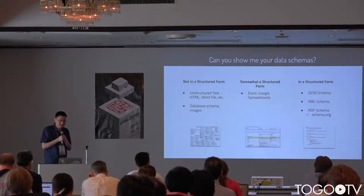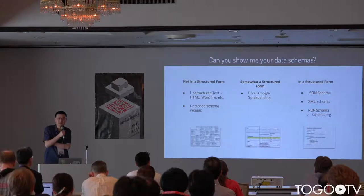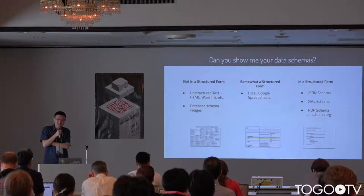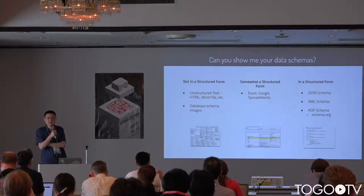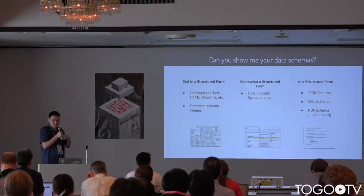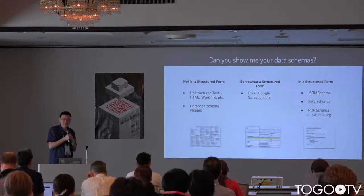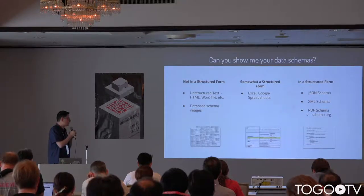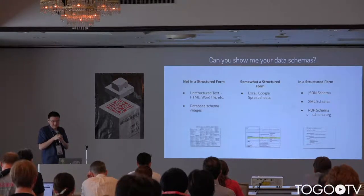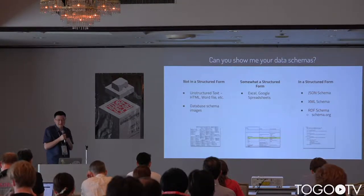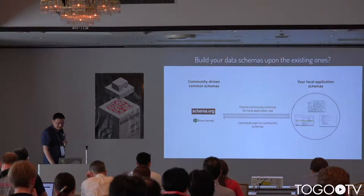The next step, slightly better, is at least a list in Excel or a Google spreadsheet — we can write code to extract that. Nowadays there are more structured forms, for example JSON Schema, XML Schema, and RDF Schema. One special format of RDF Schema is schema.org. That's a much better way, and we encourage people to represent their schema in one of these formats.